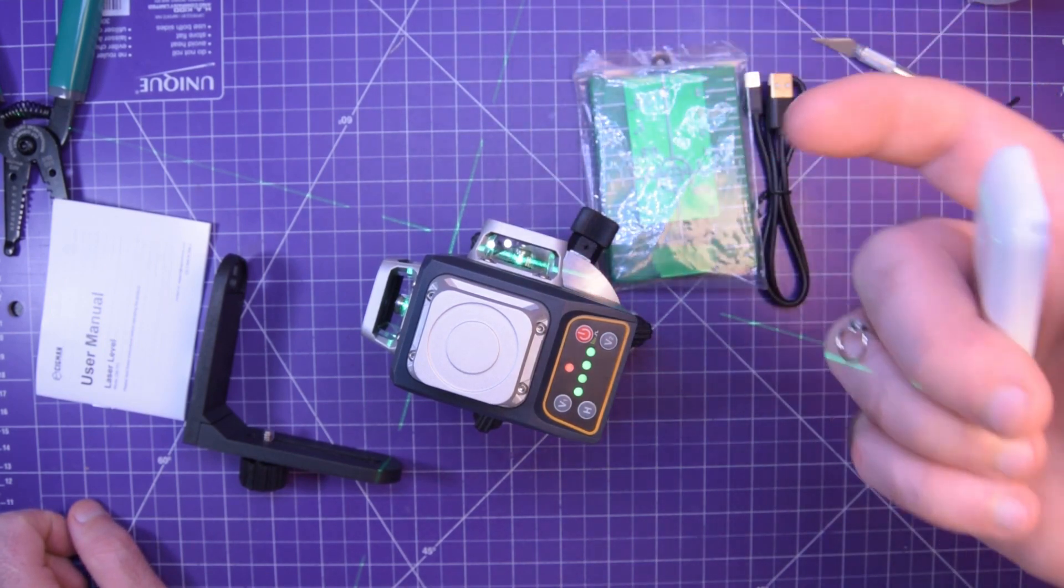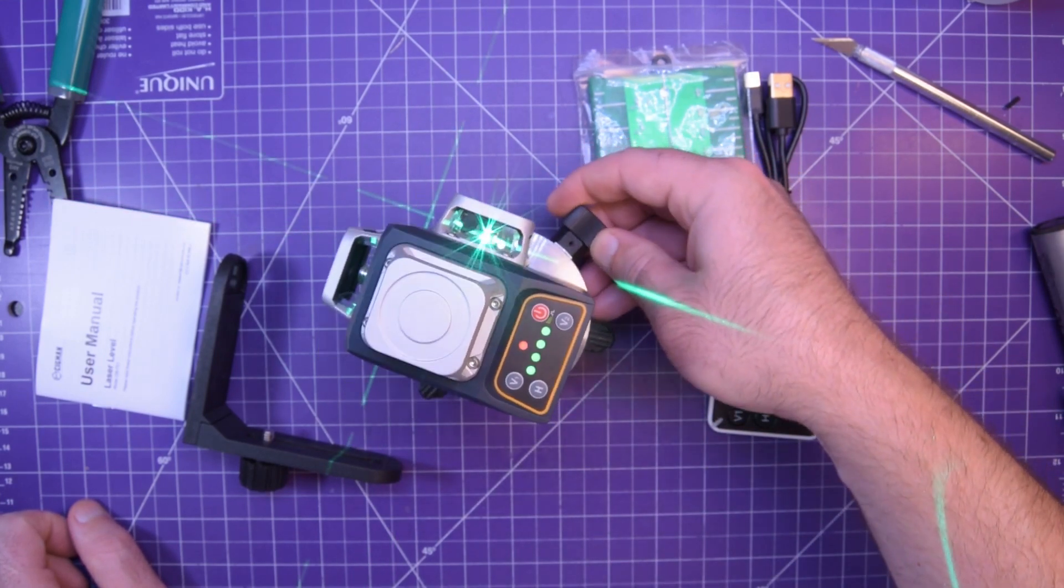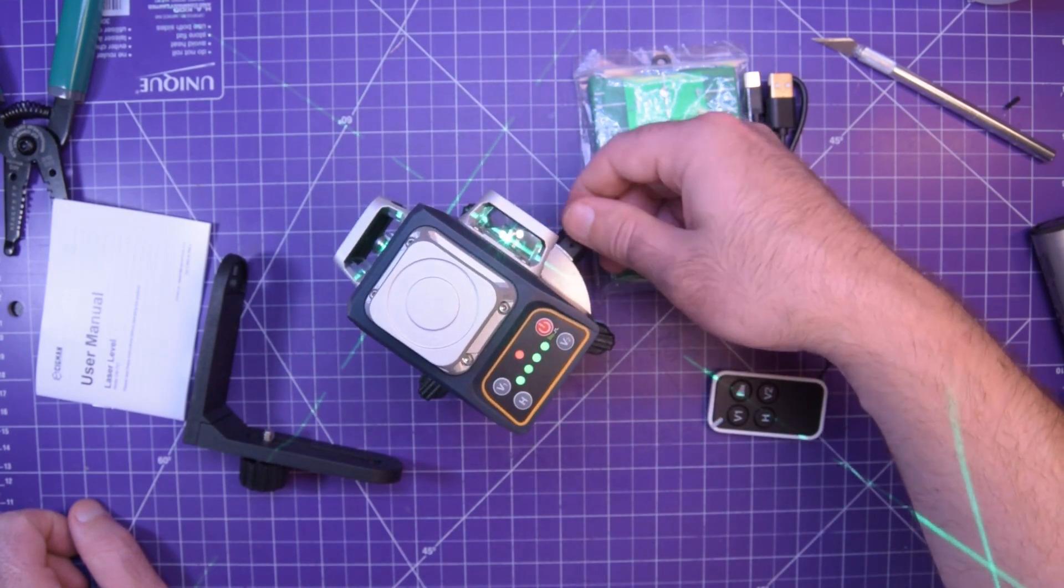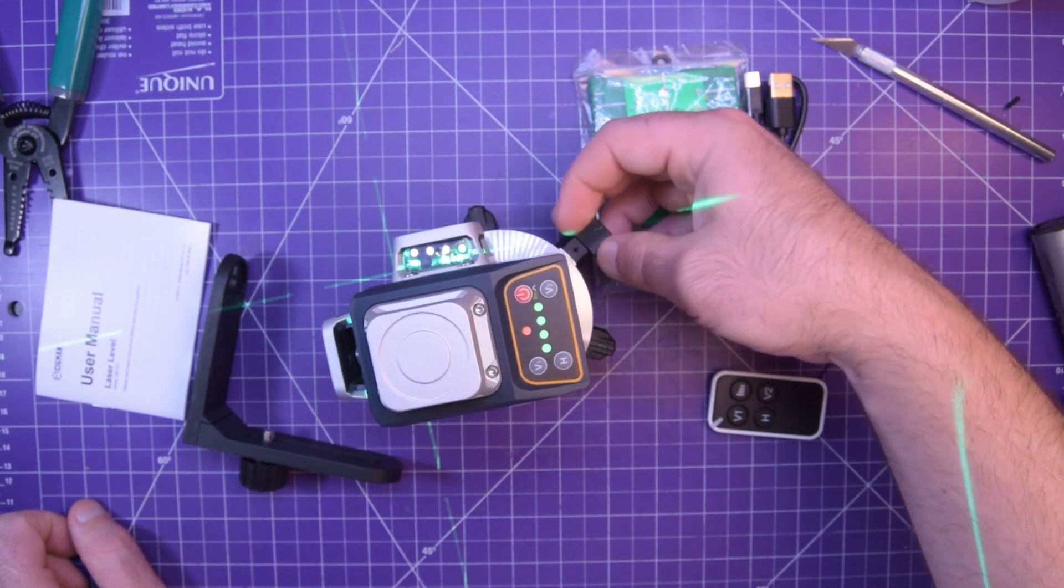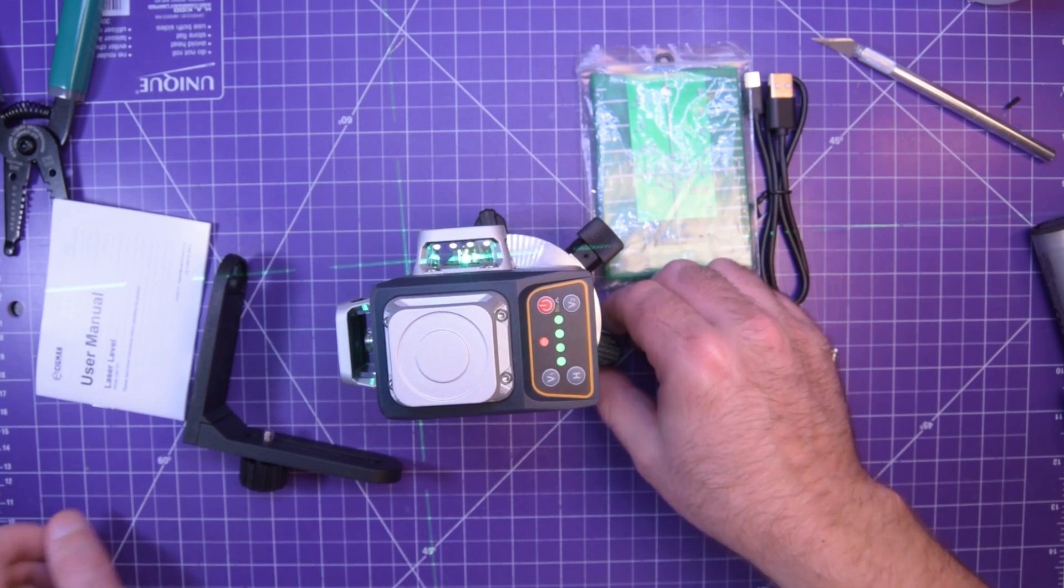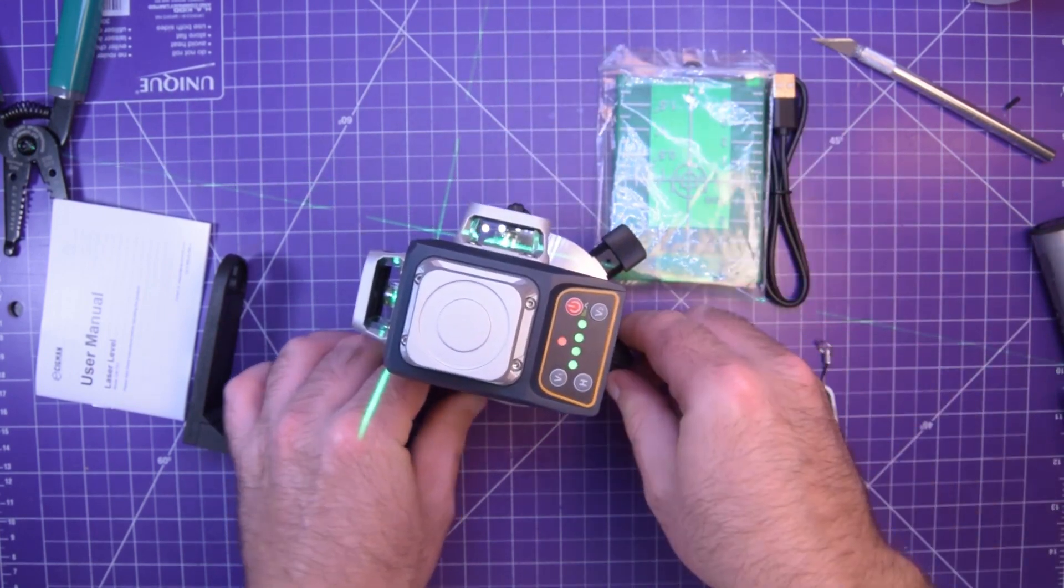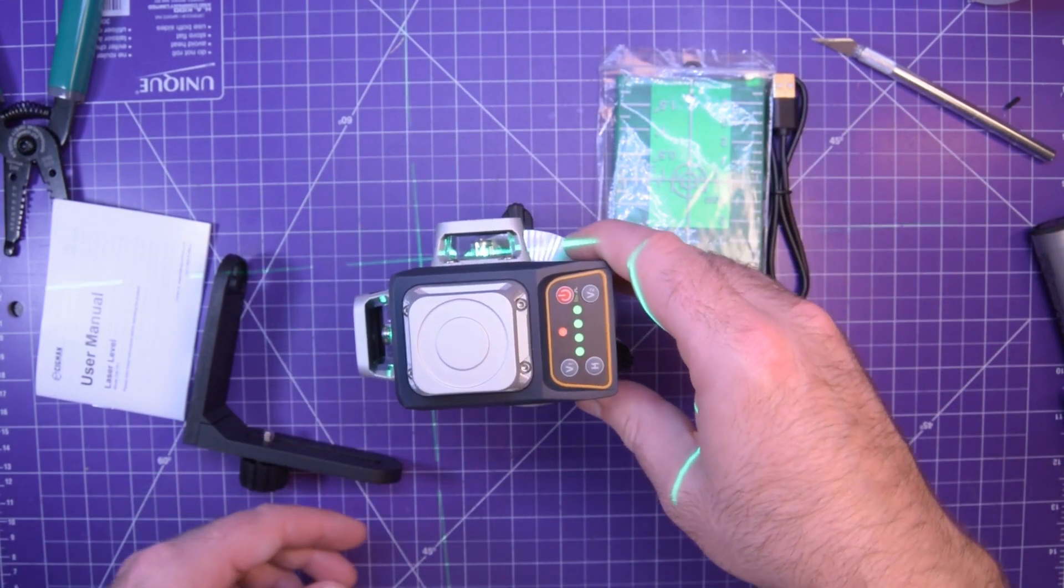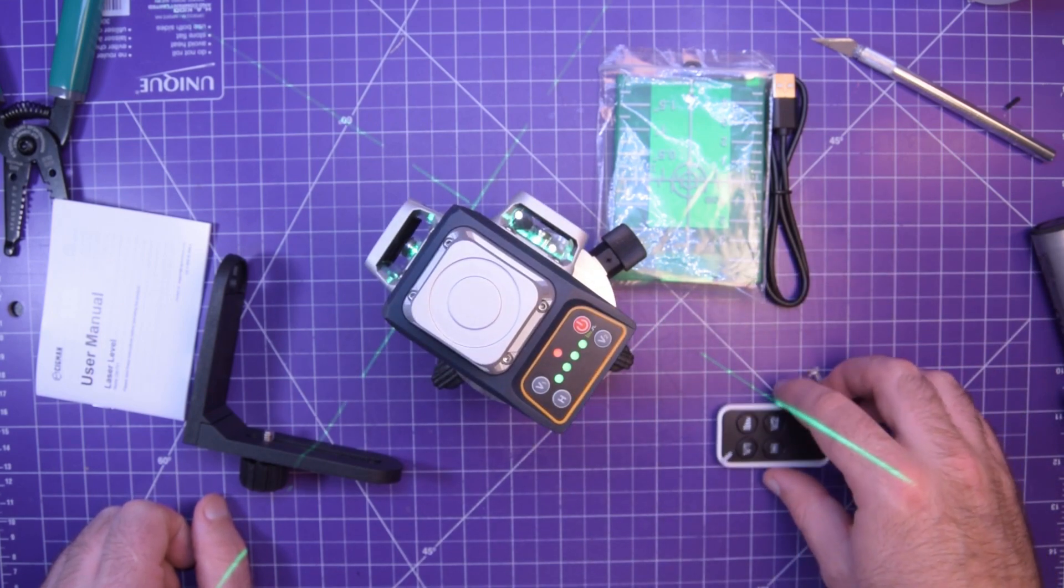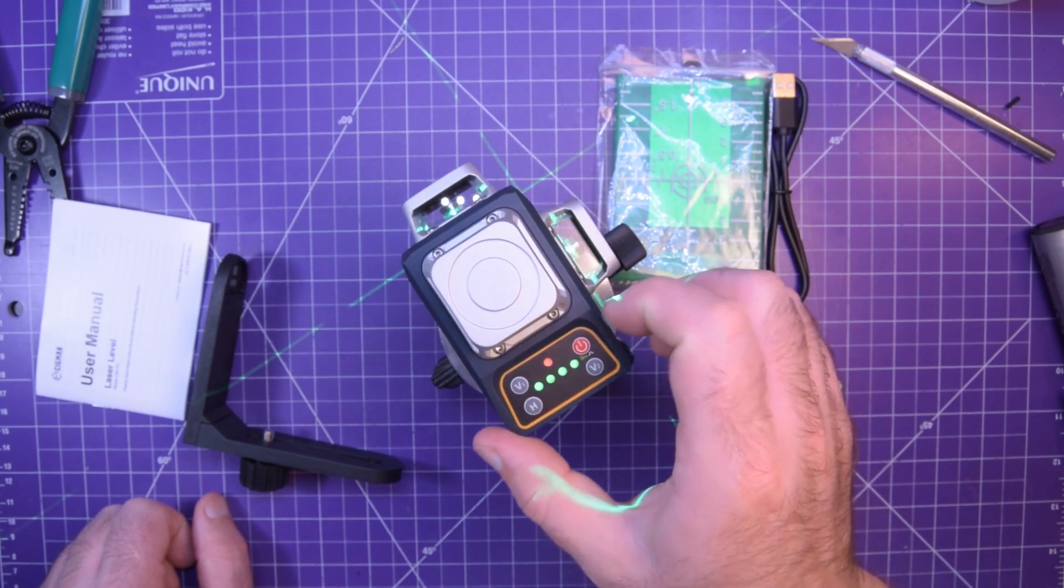It's totally rechargeable. So it apparently auto sets, like you get it pretty close to level and then it sets itself. Also, you got this little knob where you can rotate them around like so. I'm not sure what I'm going to do with this. You guys are going to have to tell me what you think is interesting about this. We can definitely take it apart and take a look at the charging circuitry and stuff like that. That might be pretty neat, but other than that, just going to point it at things and see if they're level.